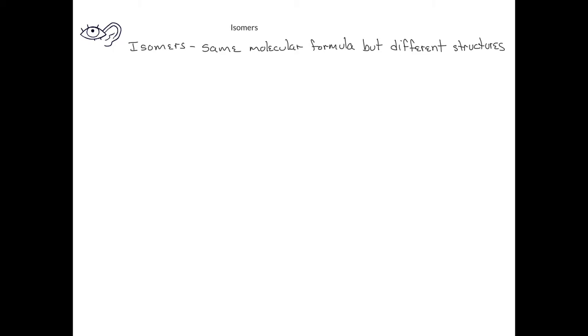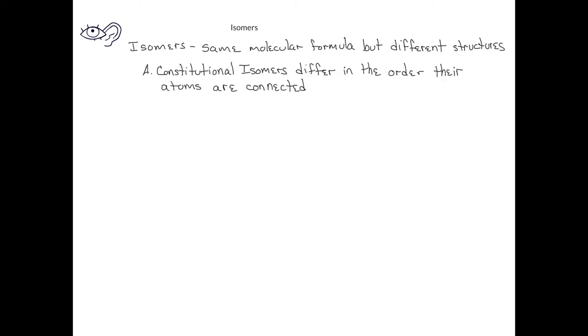We've already learned that isomers are compounds that have the same molecular formula but different structures. We can divide isomers further into constitutional isomers, which differ in the ways the atoms are connected, and stereoisomers, which differ in the way the atoms are arranged in space.